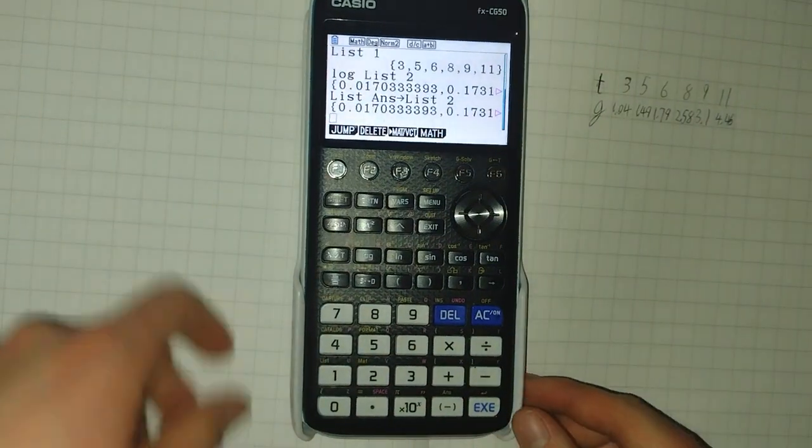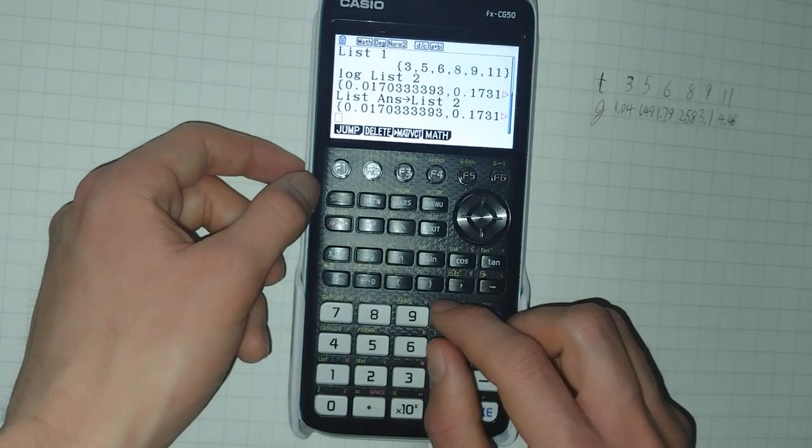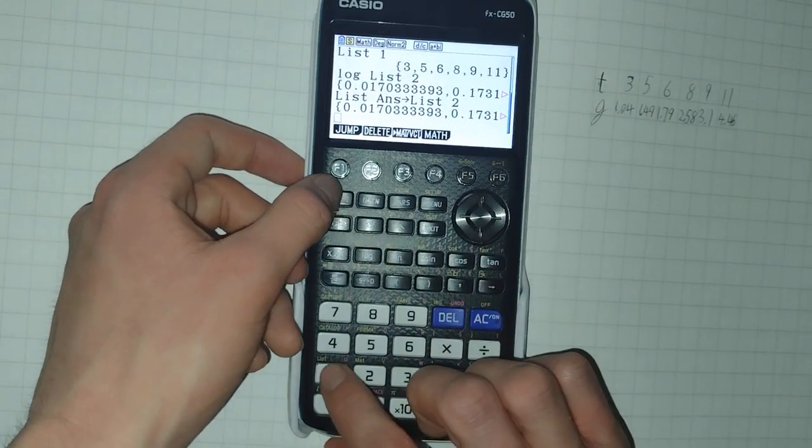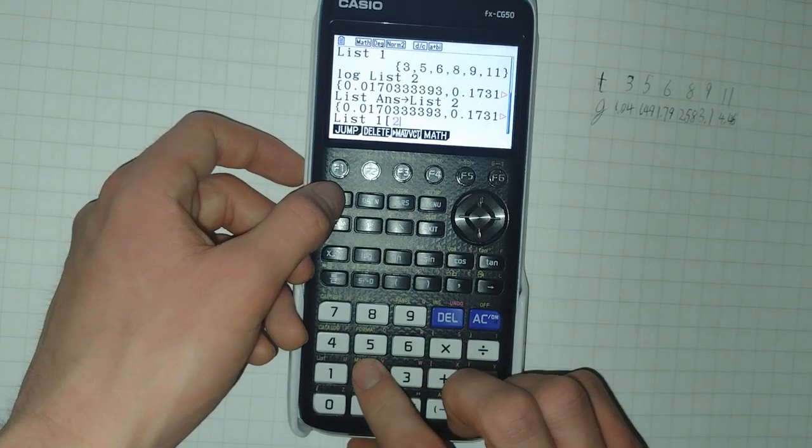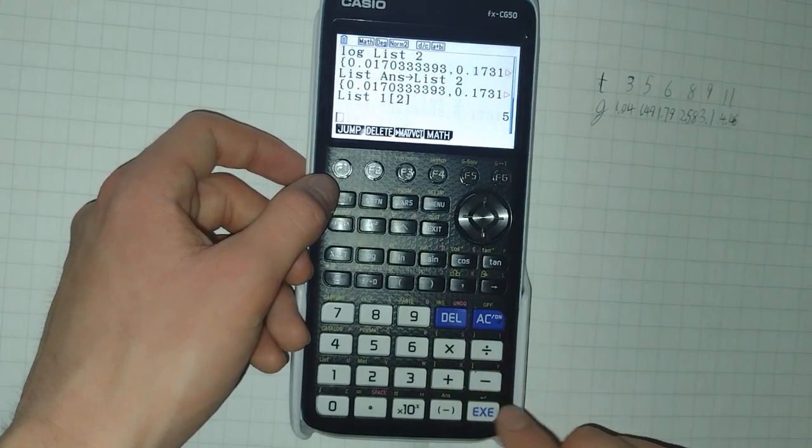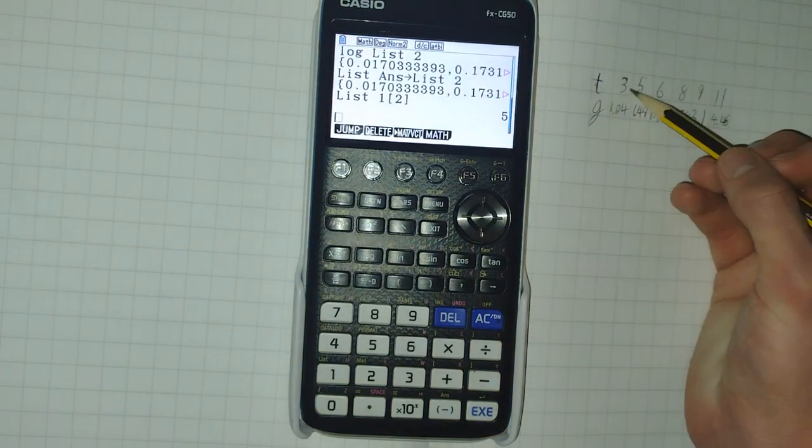You can also access individual items within lists. For example, shift list one, shift plus the square bracket two, shift close bracket will get me the second item of that list, which is a five.